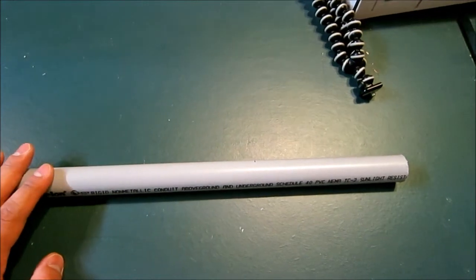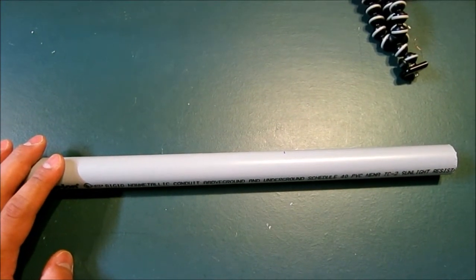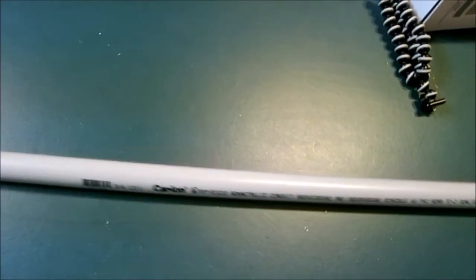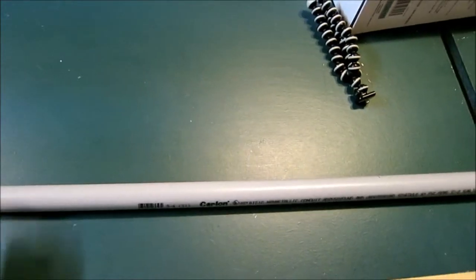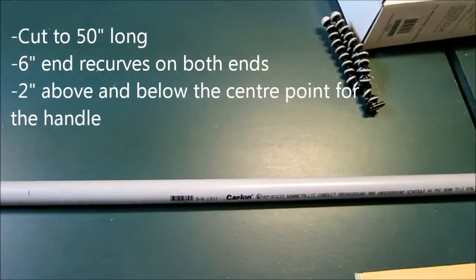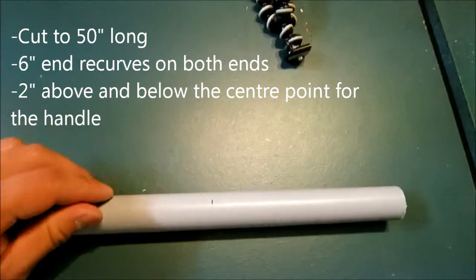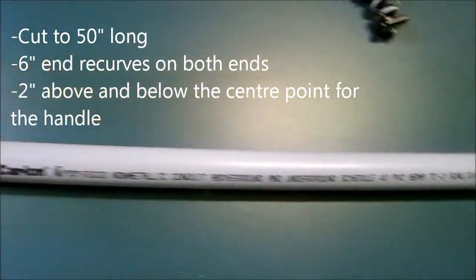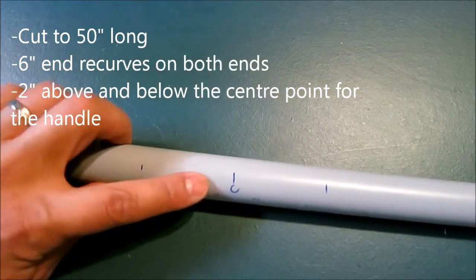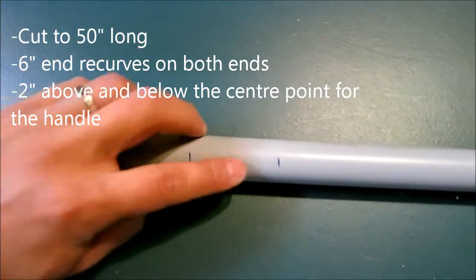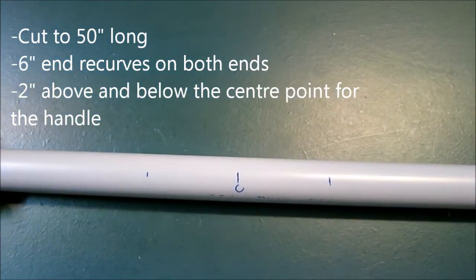I've already tried heat and flattening a piece and it worked well using a heat gun. I cut this to 50 inches long and I marked off six inches for the recurve center point, two inches above and below for the handle and I'm going to taper these limbs down.